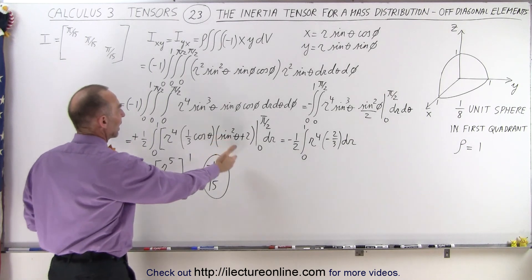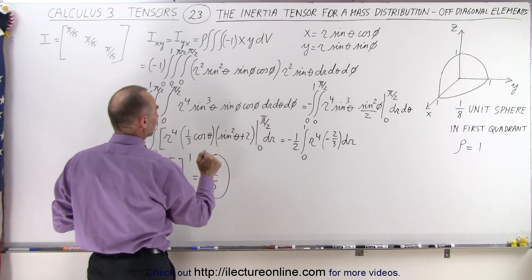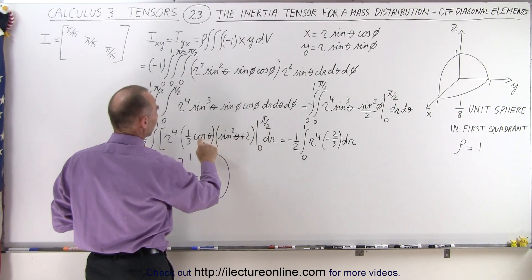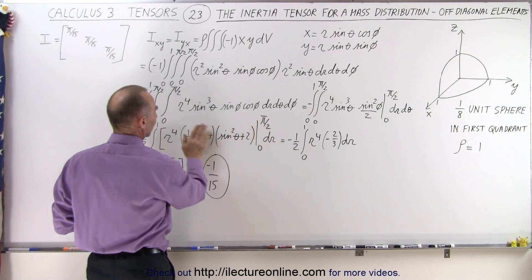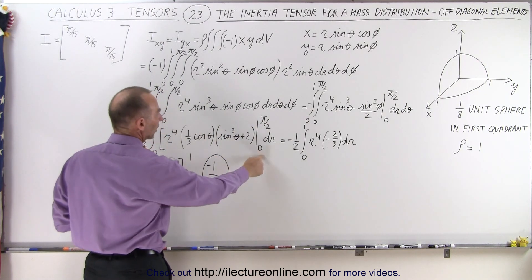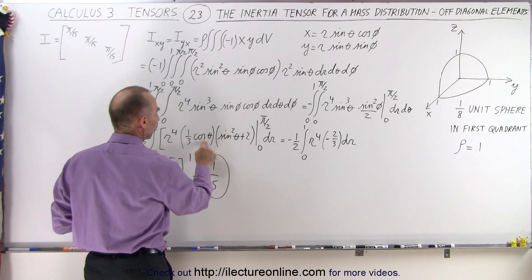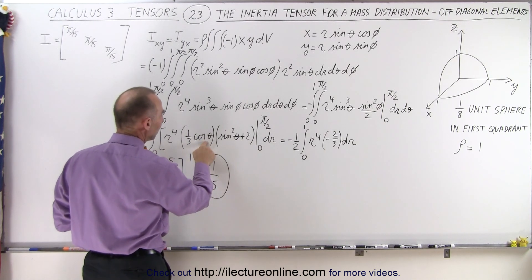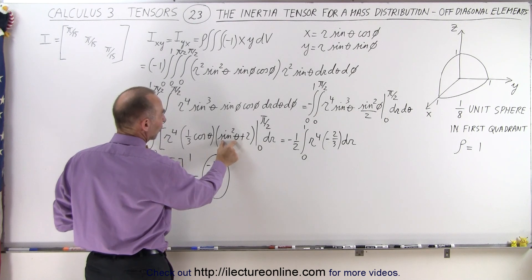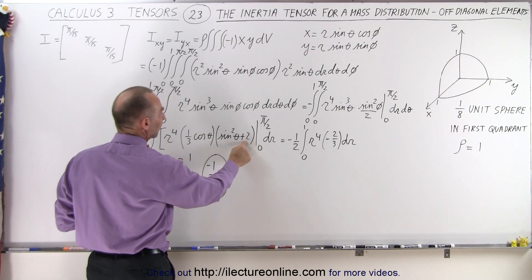So now when we integrate that, we have the limits from 0 to pi over 2. When we plug in the upper limit, the cosine of pi over 2 is equal to 0, so this whole thing goes to 0. Plug in the lower limit, 1/3 of the cosine of 0, that's the cosine of 0, that would be 1. And the sine of 0, of course, is 0, but we have a plus 2 there.